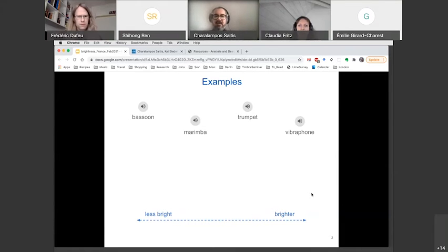All right, so I'm going to play four sounds which are ordered in terms of brightness, not by me, but actually by listeners that I will be talking about later. So this is a bassoon note, this is a marimba, trumpet, and vibraphone. And I've separated them a little bit because the bassoon and the trumpet are both sustained sounds and the marimba and the vibraphone are more impulsive, percussive type of sounds.